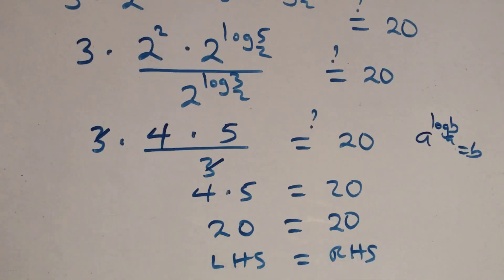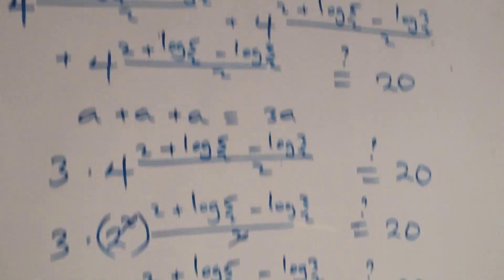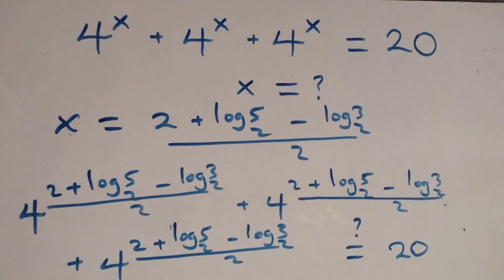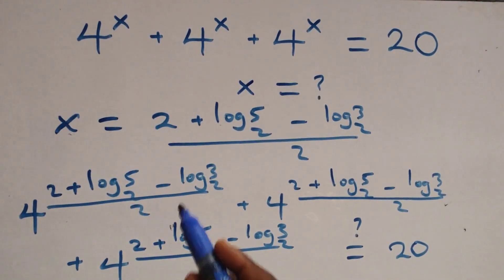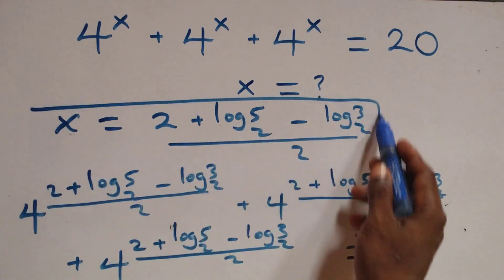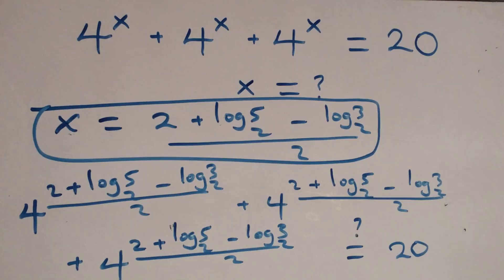Therefore we conclude that x equals to (2 plus log 5 base 2 minus log 3 base 2) over 2 satisfies the given problem. Thank you for watching.